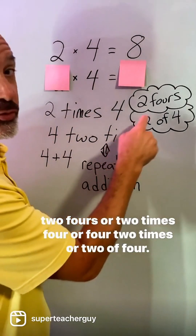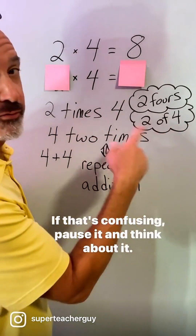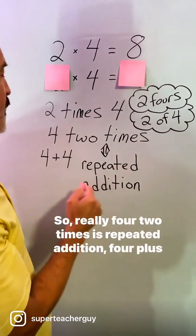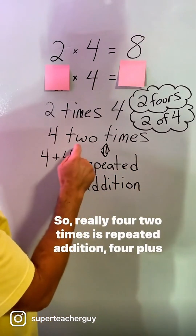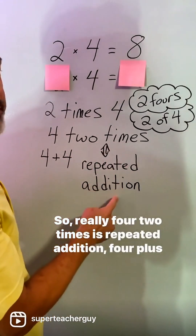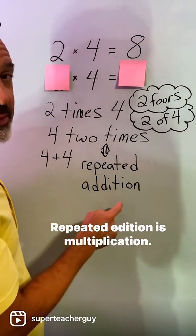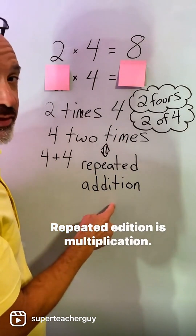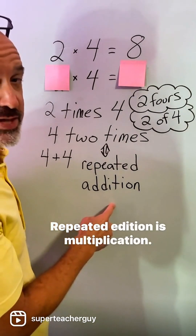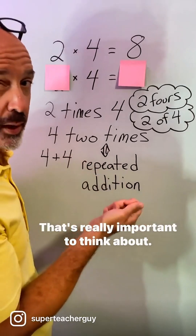Or 2 of 4 — but that's confusing. Pause it and think about it. Really, 4 two times is repeated addition: 4 plus 4. Repeated addition is multiplication. That's really important to think about.